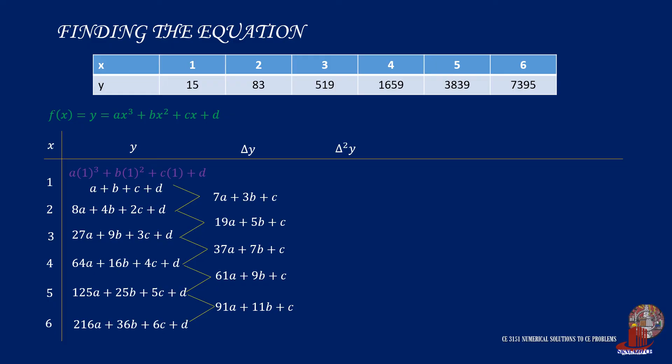Then proceed with delta squared Y. 19A minus 7A is 12A, then 5B minus 3B is 2B. Then we have 12A plus 2B. Do the same process for the rest of delta squared Y as well. Continue the difference table to the third degree, so we get 18A minus 12A as 6A, and 2B will cancel out. Next is 24A minus 18A, which is 6A, and again 2B will cancel out. Lastly, 30A minus 24A is 6A, and 2B becomes 0. Since we have the same values at this point, we can stop the difference.